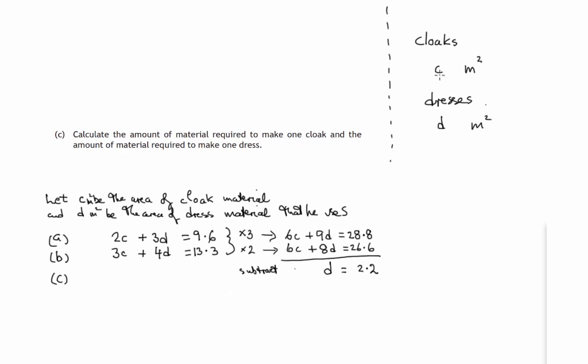Now how do we find out the amount of cloak material he used? Let's go to equation A. Now that we know D is 2.2, let's replace D by its value 2.2. So in 2C plus 3D equals 9.6, in that equation, let's get D equal 2.2. So what do we get? 2 lots of C plus not 3D but 3 lots of 2.2. We now know that D is 2.2, and that gives us 9.6.